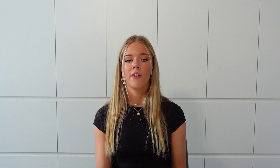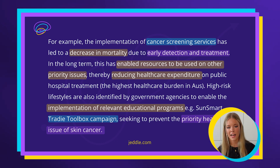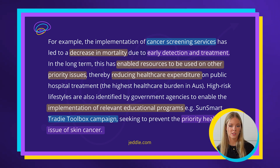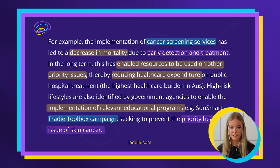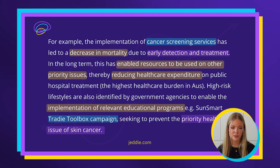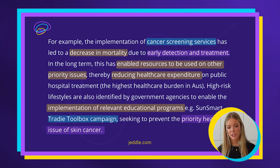The second part of my response includes a more in-depth example. For example, the implementation of cancer screening services has led to a decrease in mortality due to early detection and treatment. In the long term this has enabled resources to be used on other priority health issues, thereby reducing healthcare expenditure on public hospital treatment, the highest healthcare burden in Australia. High risk lifestyles are also identified by government agencies to enable the implementation of relevant educational programs, e.g. SunSmart and Tradie Toolbox, seeking to prevent the priority health issue of skin cancer.